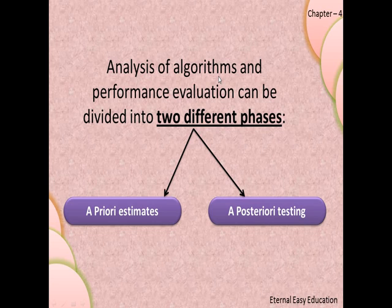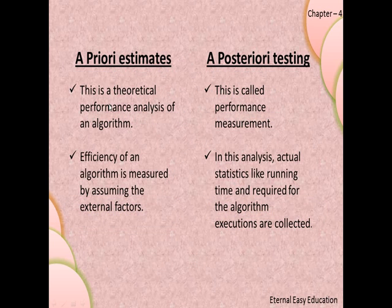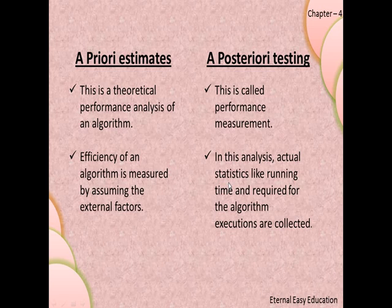The analysis of an algorithm has two phases: one is priori (theoretical) and another is posterior (practical). In priori analysis, the theoretical performance efficiency of an algorithm is measured by assuming external factors. In posterior analysis — performance measurement — actual statistics like running time required for algorithm execution are collected during runtime.